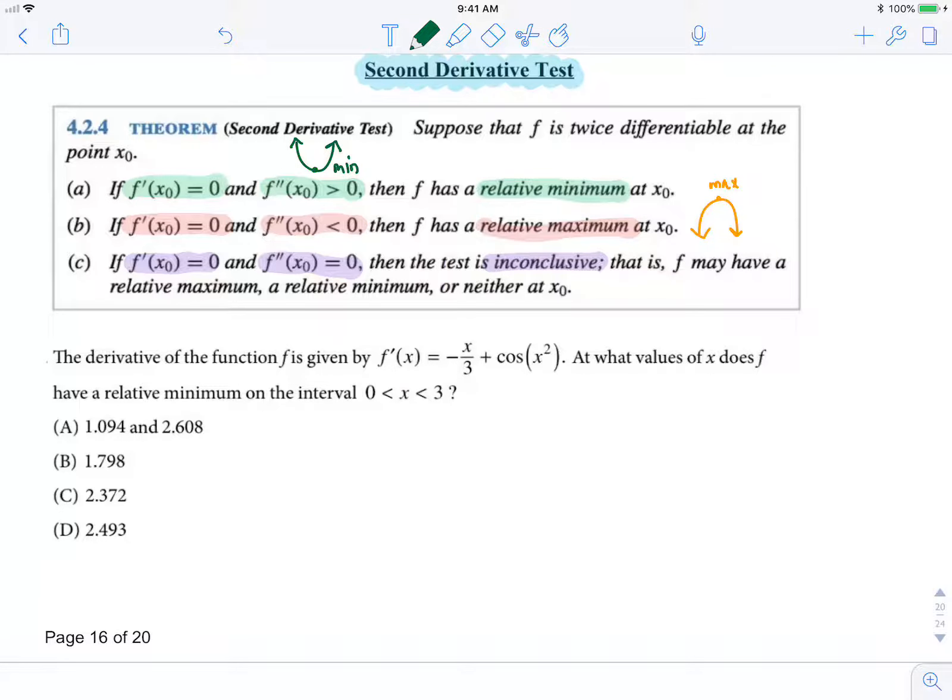So now in this problem, we are given the derivative. So we have our derivative function, and we're looking for where does it have a relative minimum over the interval